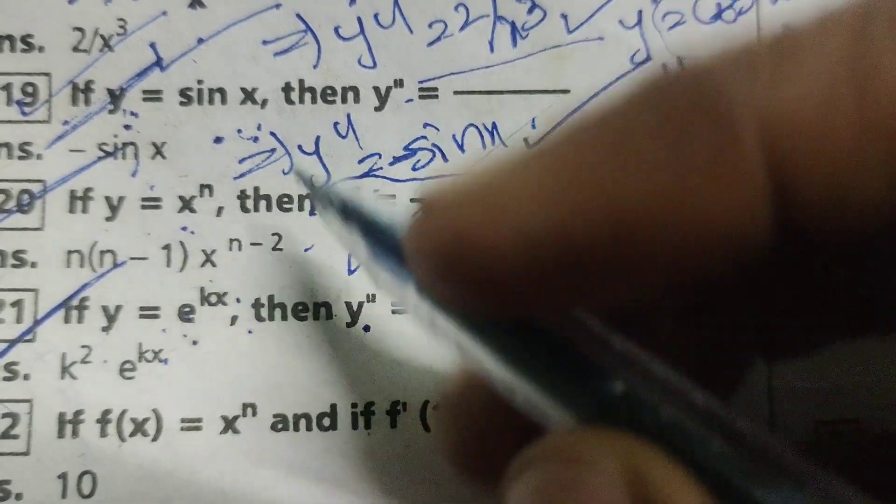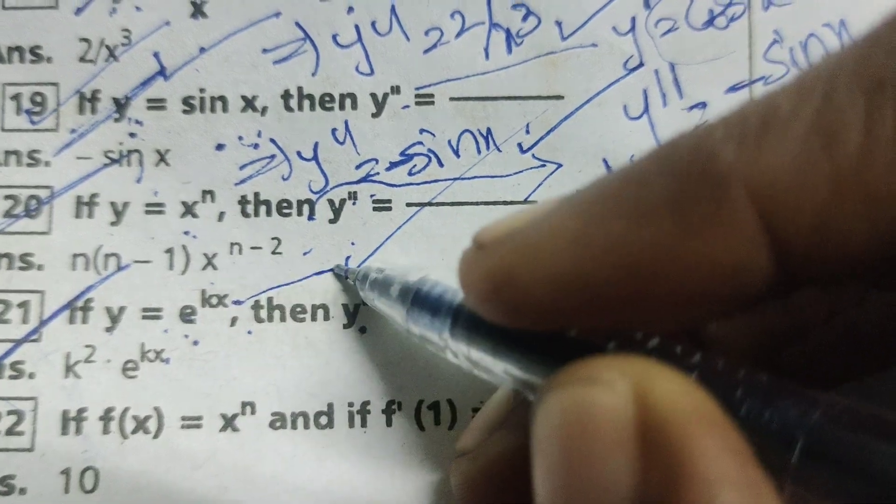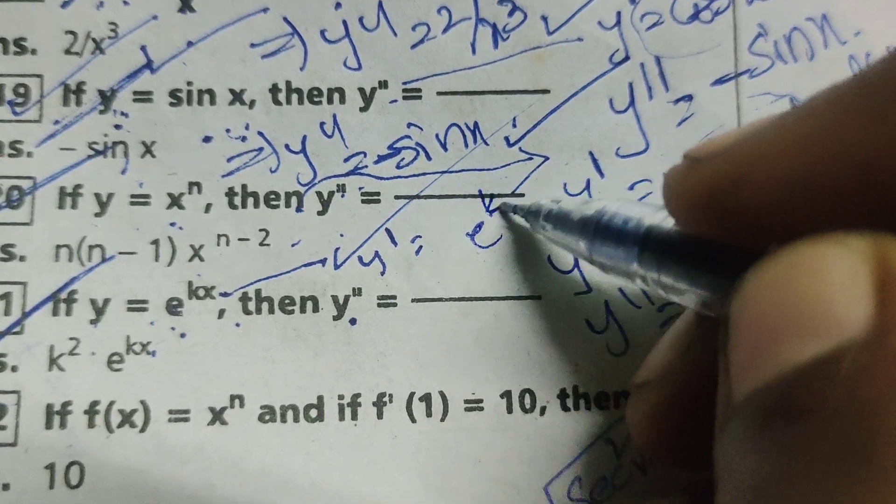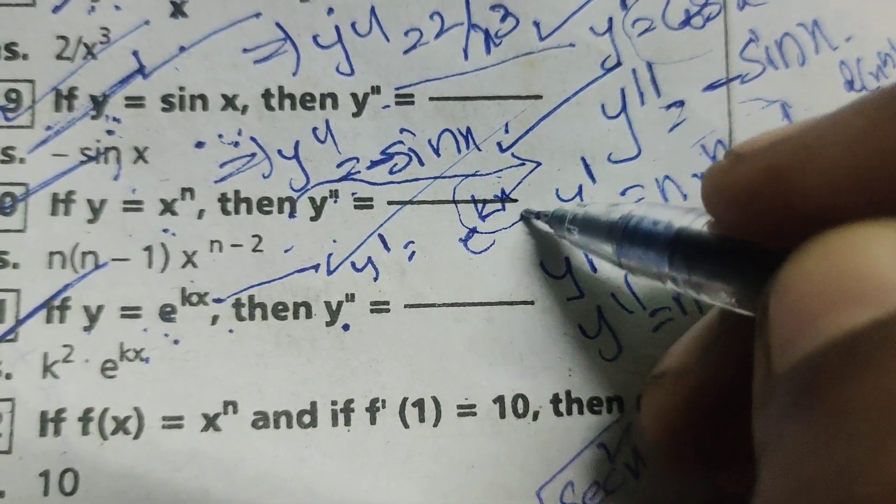But here, differentiating one time means y dash equals e power kx times k, where k is the derivative of kx.